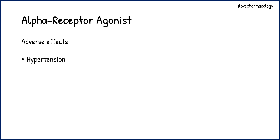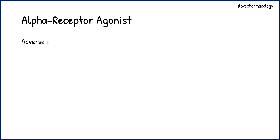Moving on to the adverse effects profile of alpha receptor agonists: they cause hypertension, since on the blood vessels they cause vasoconstriction leading to an increase in blood pressure. In patients who have a risk for hypertension or who are already hypertensive, these drugs should be avoided. They can also cause reflex bradycardia.